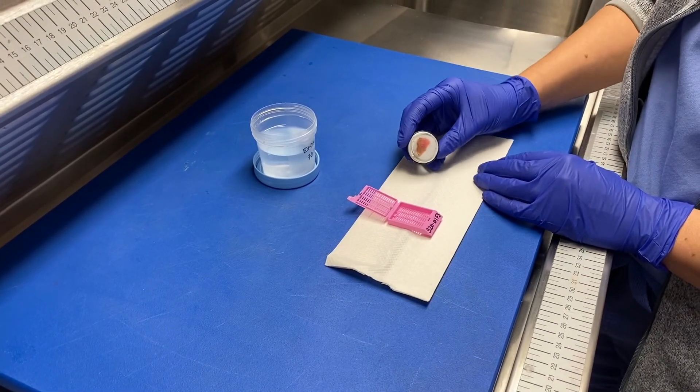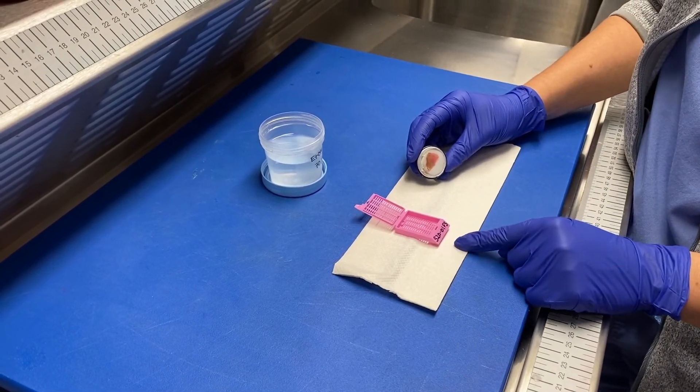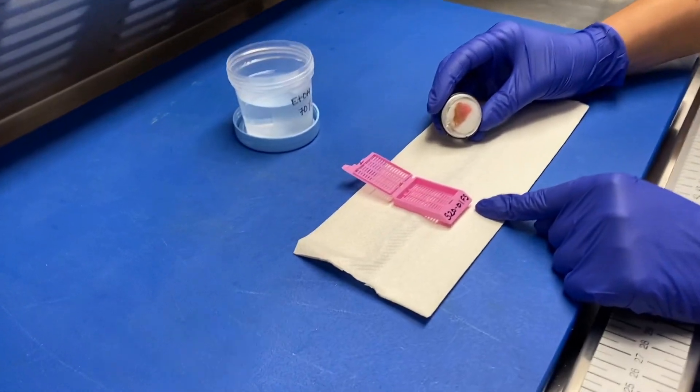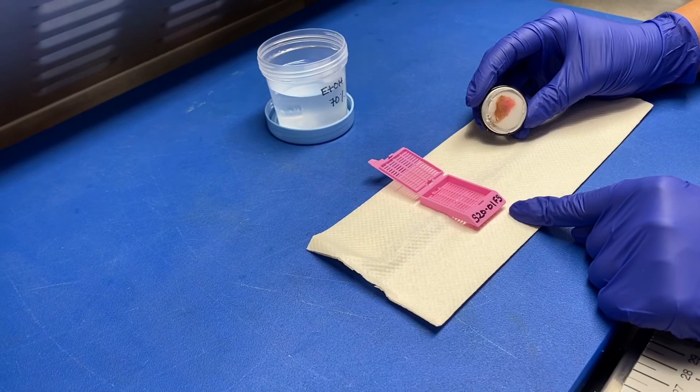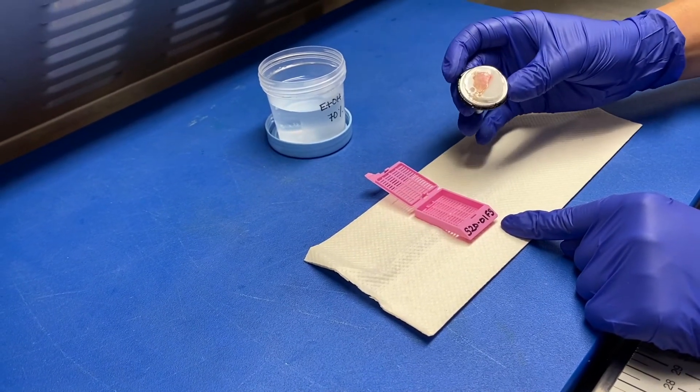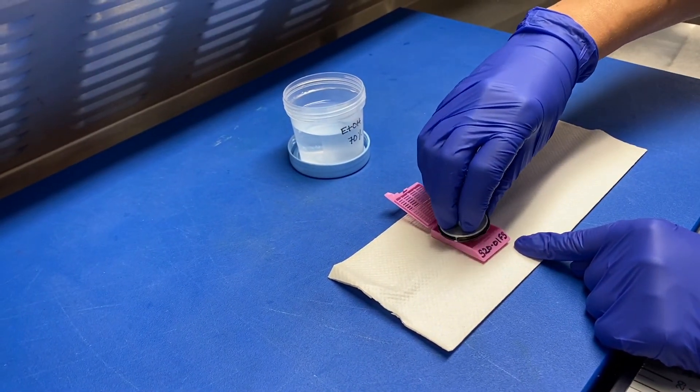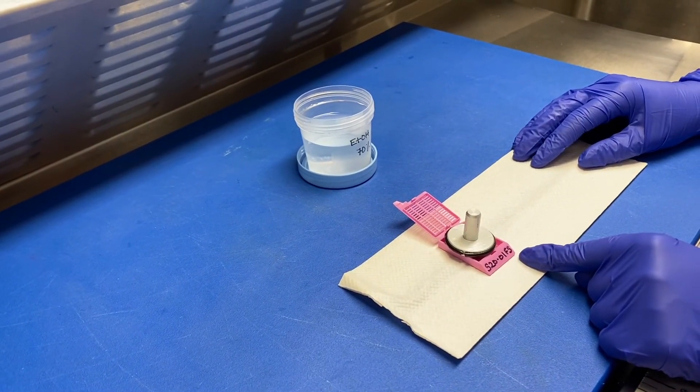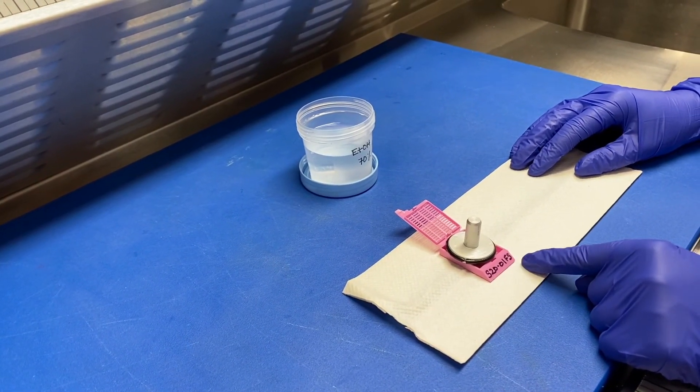After the frozen section is complete, we're always going to label our cassette and indicate by the letters FS that this is the frozen section remnant. The easiest way to do this is to place the chuck in the labeled cassette and let it come to room temperature so that the OCT melts away from the chuck itself.